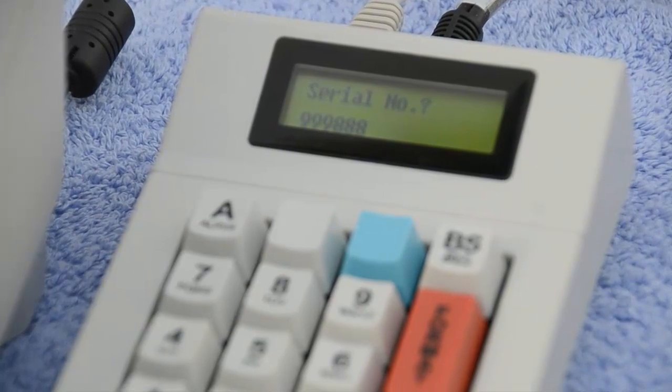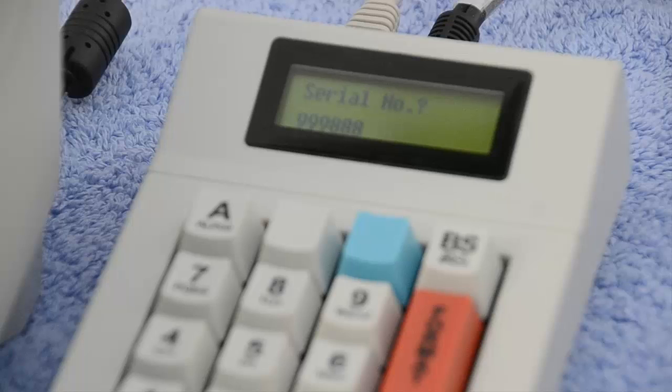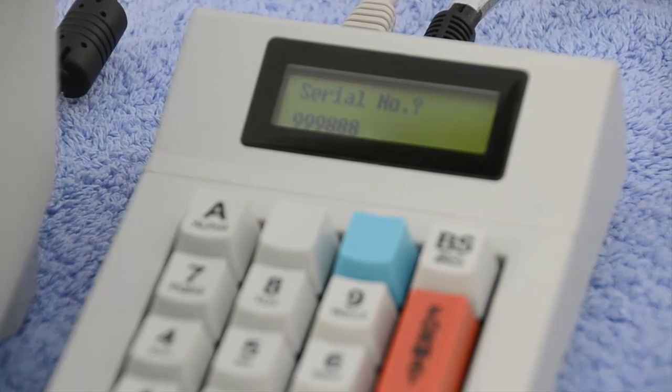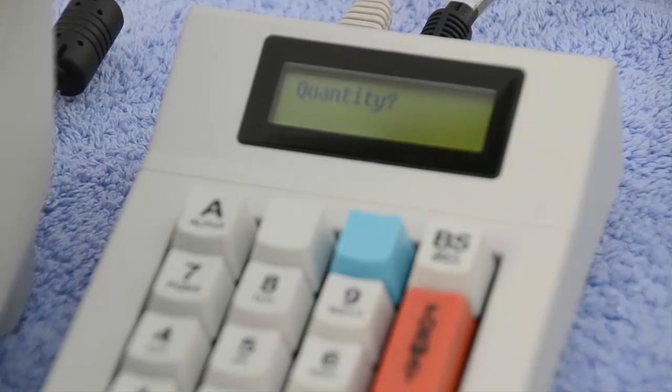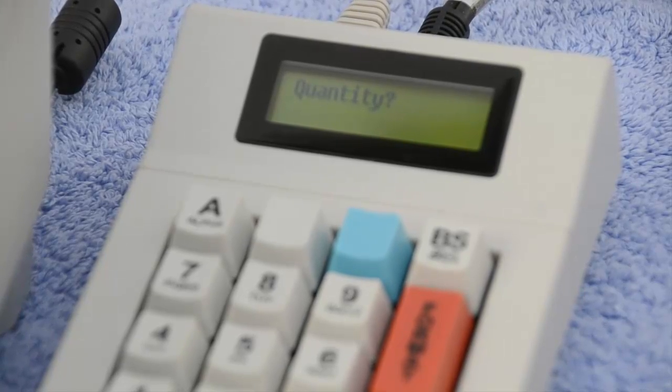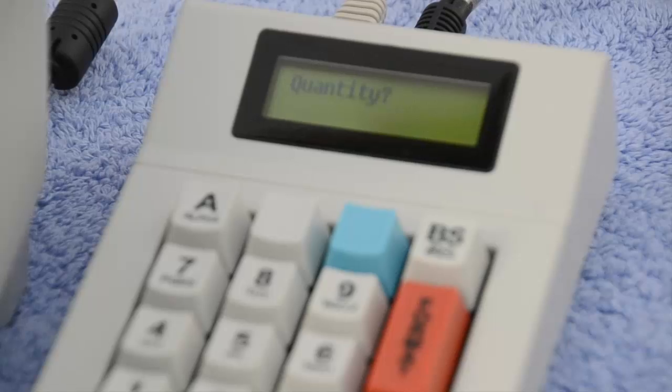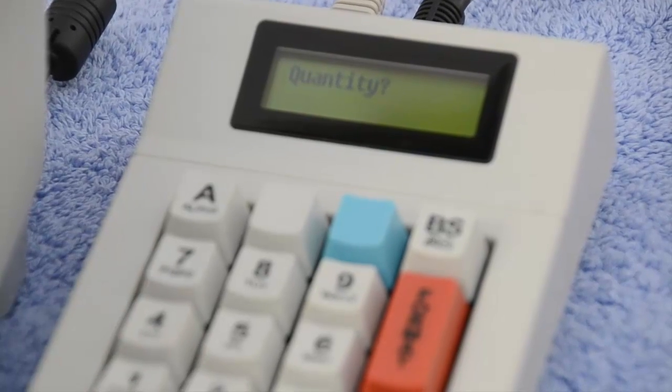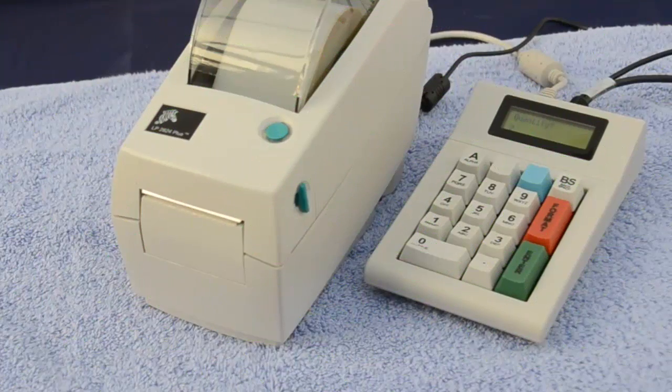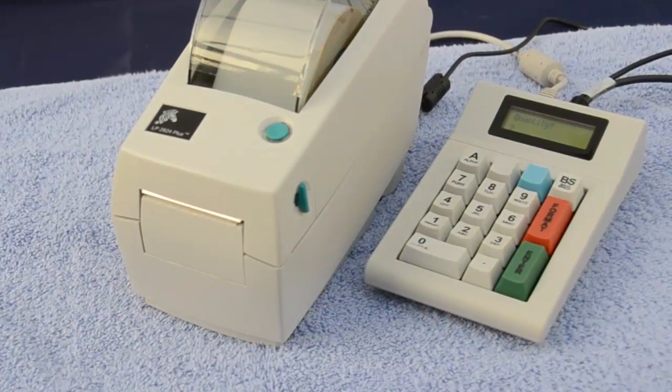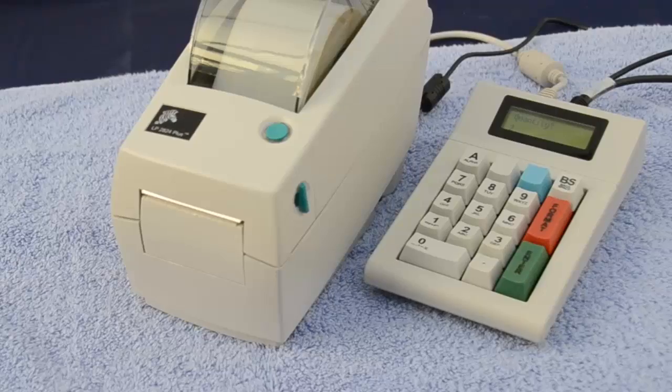Again, this can either be entered on the keypad or read by using a barcode reader. The final question asks how many labels would you like to print. In this case we will print two. In this instance we are asking for two labels to be printed, so we have entered two.